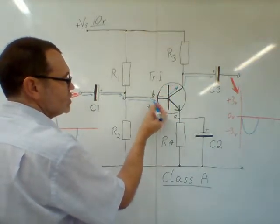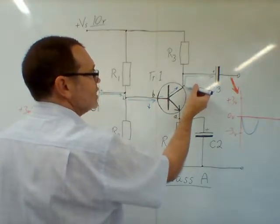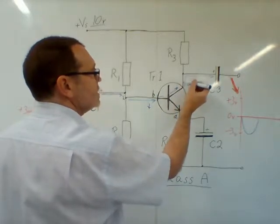This will mean a reduction in current through the base, which also then translates to a large reduction in current through the collector. So the signal is transferred through to the collector.